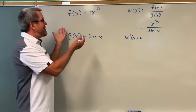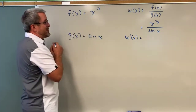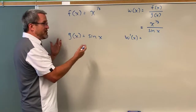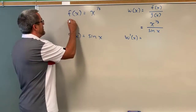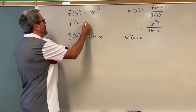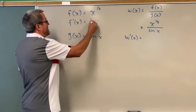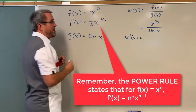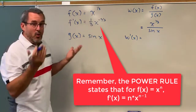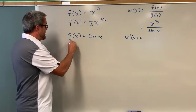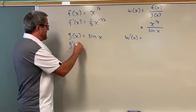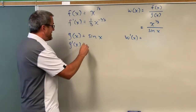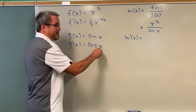Let's go back to things that you already know about. Taking the derivative of a power — a variable raised to a power like x to the one-third — we know the derivative is one-third x to the negative two-thirds power. Or, taking the derivative of a trigonometric function like the sine of x, we know that the derivative of sine of x is cosine of x.